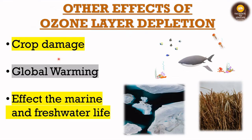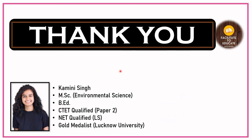Other effects of ozone layer depletion include: damage to crops, global warming — which is a vast topic we will cover in other videos — and effects on marine and freshwater life. If the ozone layer depletes, the growth of planktons may be adversely affected. Since planktons are the primary producers of marine and freshwater ecosystems, their loss could destroy marine life completely. I hope you understood all the concepts. Subscribe to the channel for more informative videos and share it with friends preparing for competitive exams.